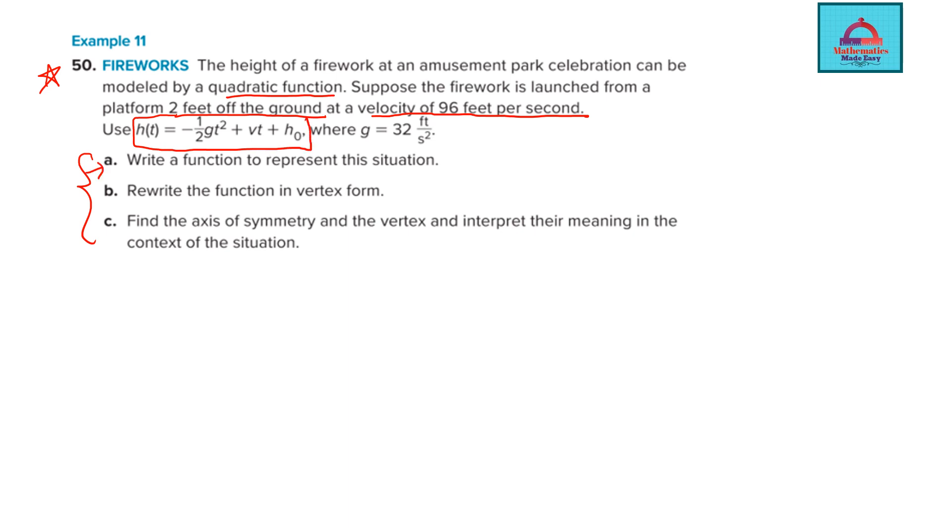And you're also given the value of the variable g. So first step in a word problem is to highlight the important information. So let's answer part a. We need to write the function to represent the situation. In the question, the function is already given. Let's write the function. One more time. I'm just copying it from the question itself.